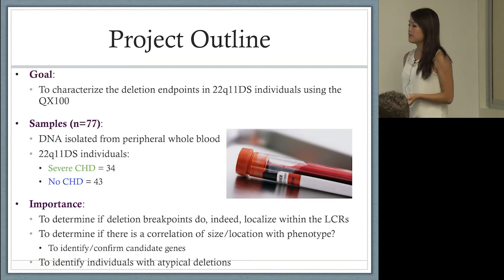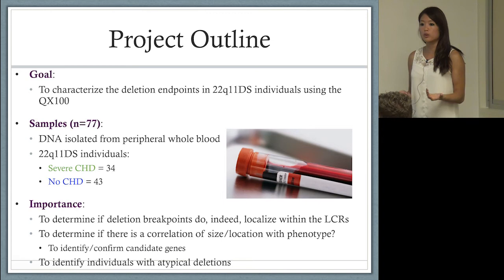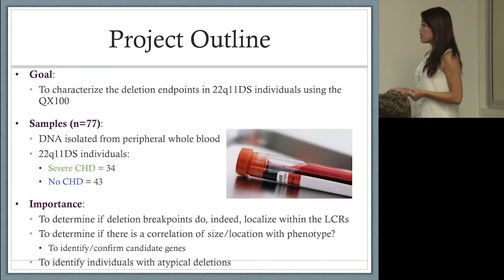This is important because we'd like to see if the deletion breakpoints do localize within the LCRs. It makes sense that they would, but there hasn't been a conclusive study to look at it. We also want to see if there's a correlation of the size or location of deletion with CHD. That would help us identify or confirm certain candidate genes. We're also interested in identifying individuals with atypical deletions.